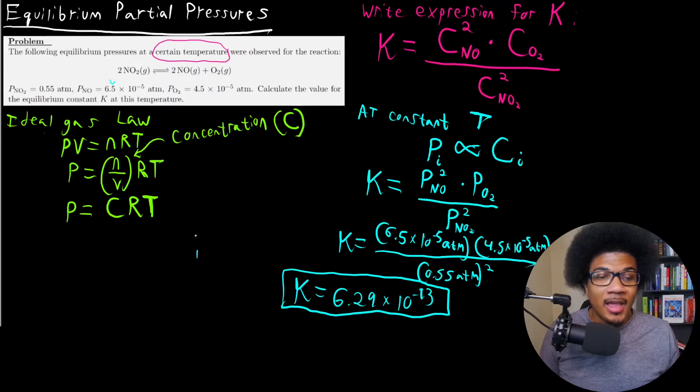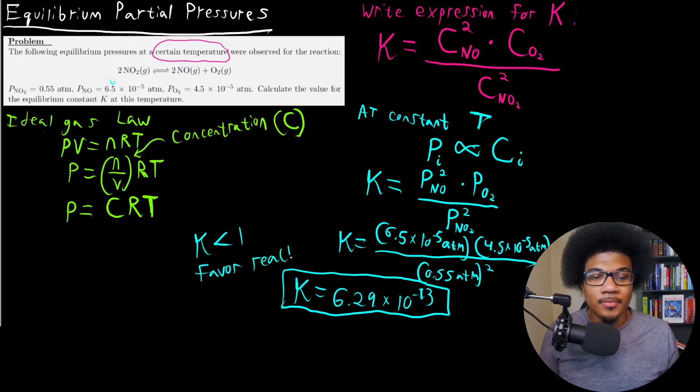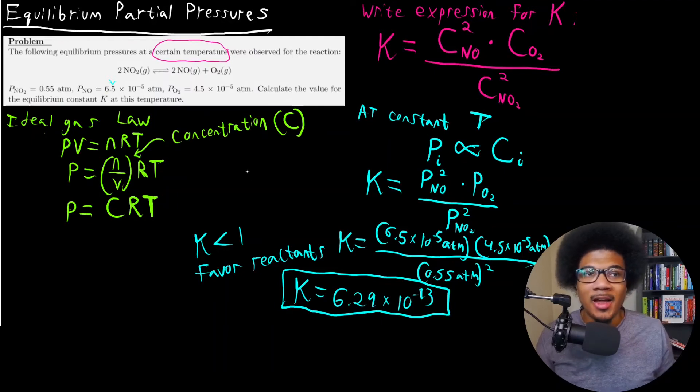So that means K, since it is less than 1, is going to favor the reactants. It favors the reactants because that concentration of the reactants is gonna be greater at equilibrium. Since this K is less than 1, that's what we get from the equilibrium constant expression.